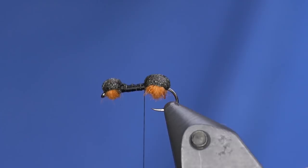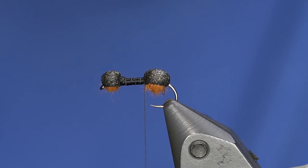So now because we're going to make this a flying ant, I'm going to take three pieces of CDC and line them up by the tips just like that, and I'll tie those going back over the body.